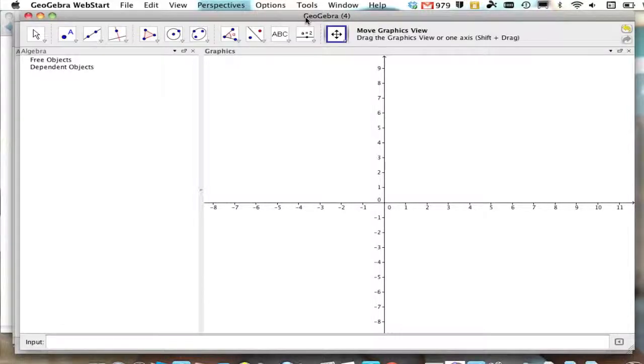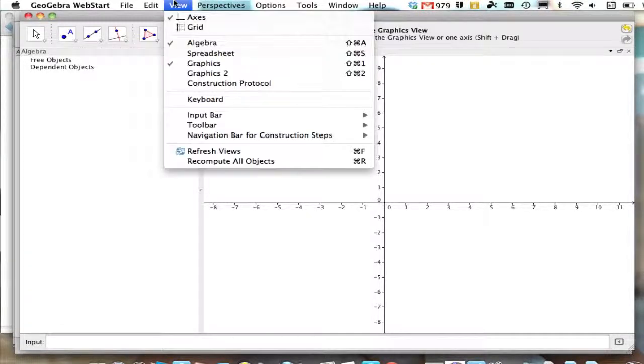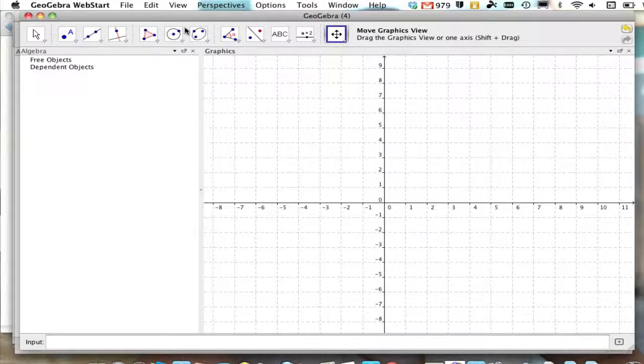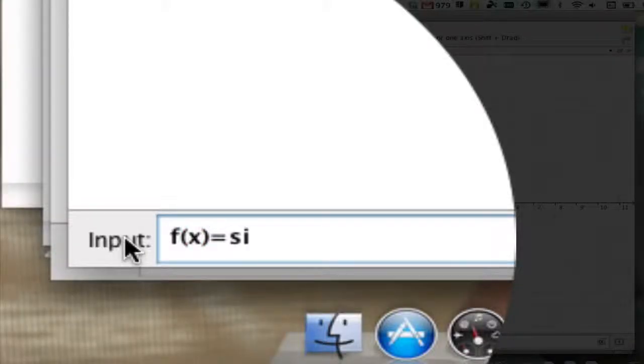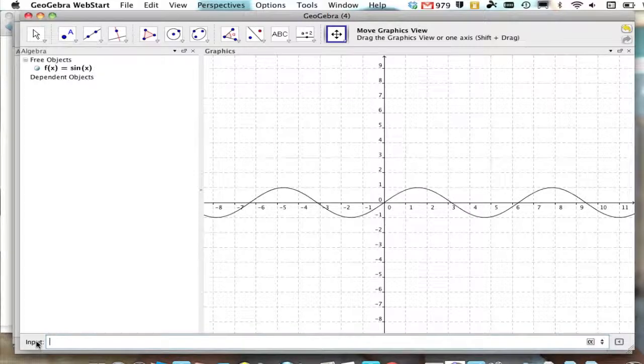To graph derivative functions, turn on the grid to give you a better sense of what's going on. Now down here in the input bar, go ahead and type in your function f of x. We'll start with sine x. When we press enter, we get a nice sine curve here.